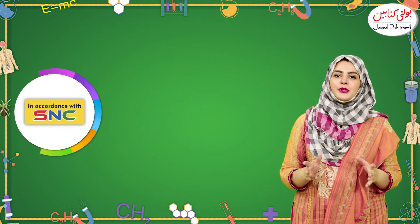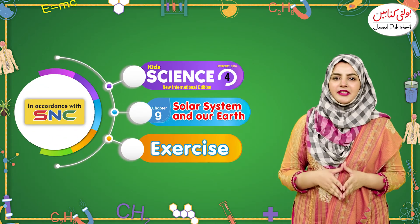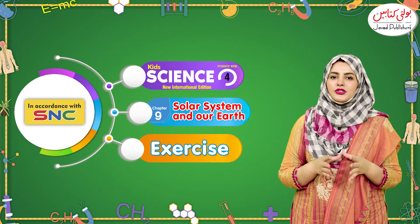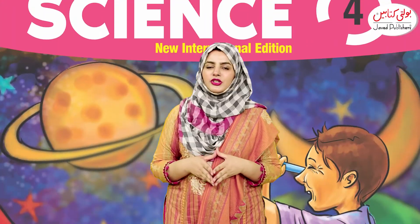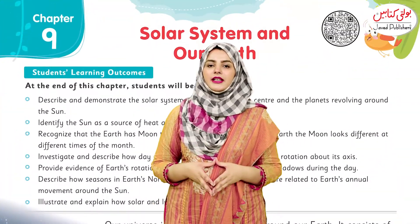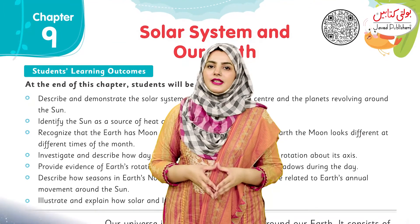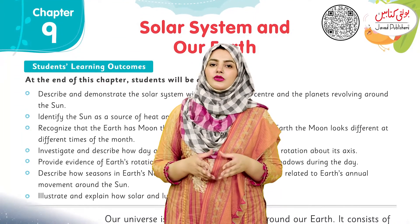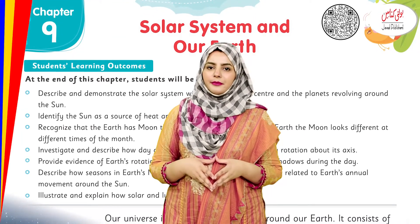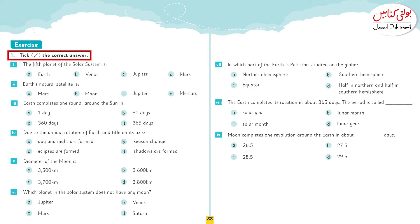Assalamualaikum viewers, I hope you all are fine. This is Naila Tahreem, and I welcome you all to Javed Publishers. Today we will solve the exercise of Kid Science Grade 4, Chapter 9, on the topic of Solar System and Our Earth. Take out page number 88 of your textbook. Let's do the exercise.